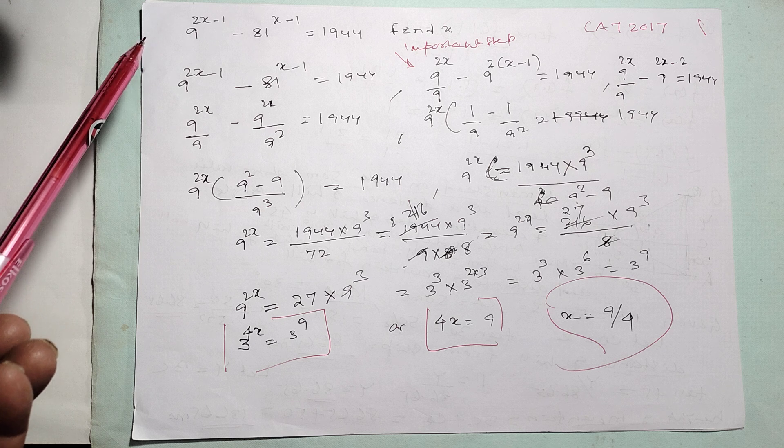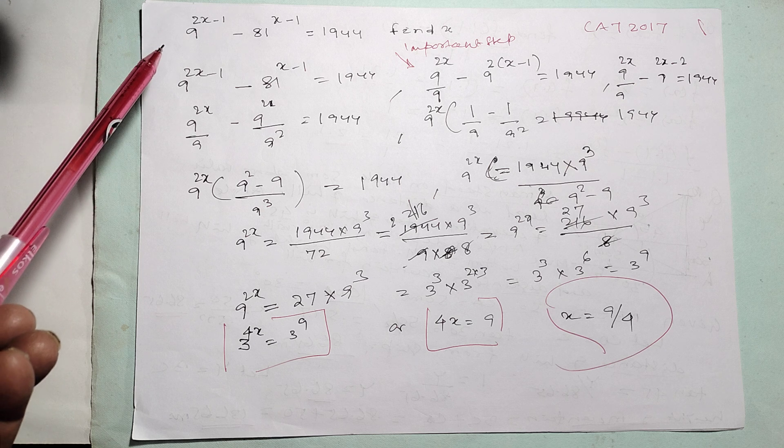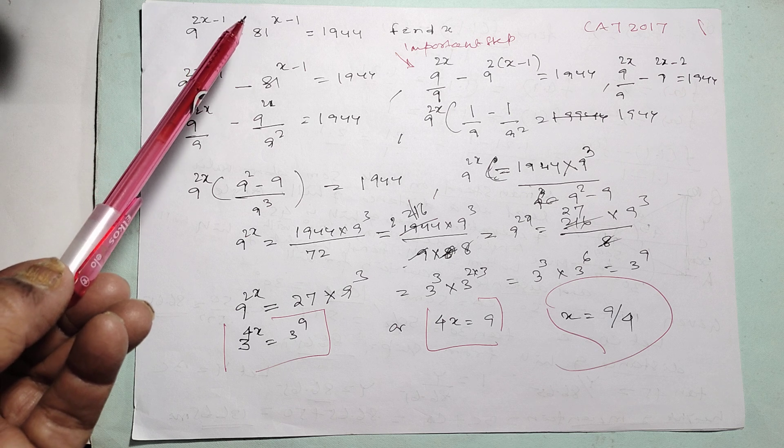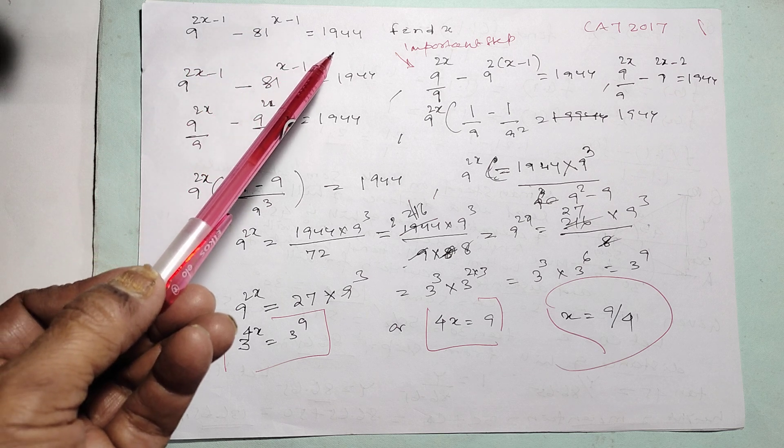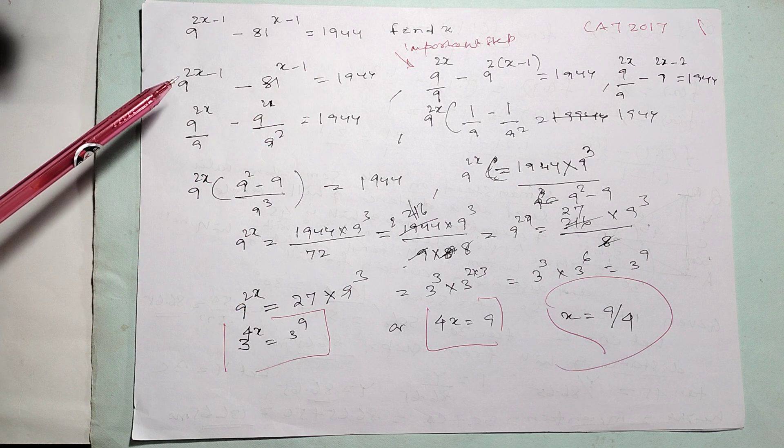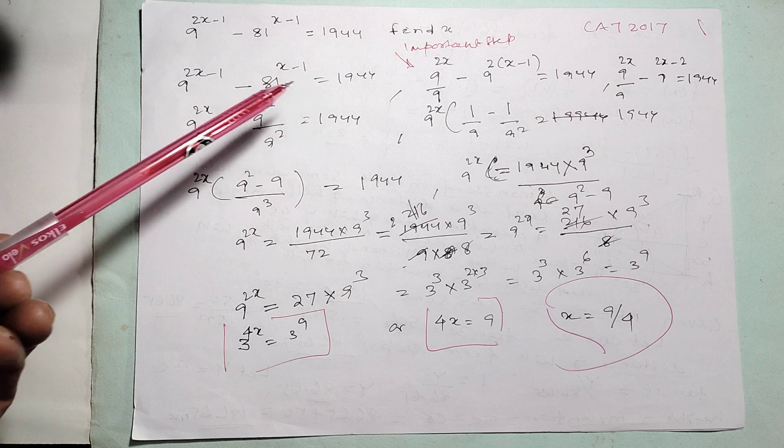Here, this is a question from CAT 2017. 9 to the power 2x minus 1, minus 81 to the power x minus 1 equals 1944. Find x. In this type of problem, first you think how to. If you know this step only, you can easily solve.